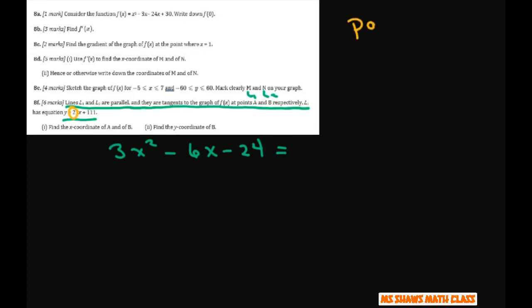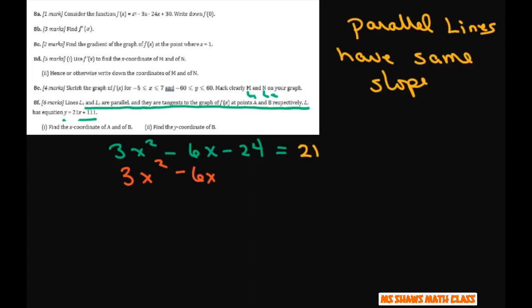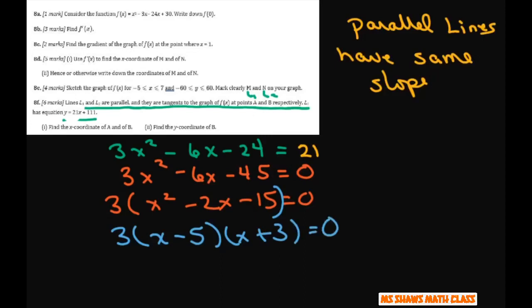Parallel lines have the same slope. So basically you're just going to put equals 21 because this slope was 21 there. And then solve for that. So you're going to get 3x squared minus 6x minus 45 equals 0. Factor out a 3. Here's your x squared minus 2x minus 15 equals 0. Factor further. This will be x minus 5 times x plus 3 equals 0. So basically x equals 5 and x equals negative 3.